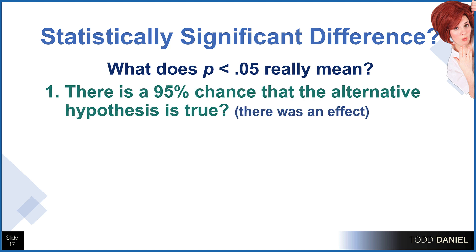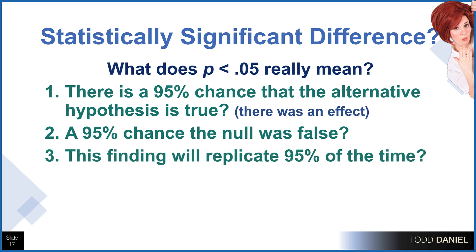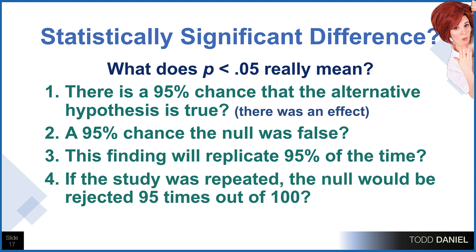If I tell you that there is a statistically significant difference at p less than 0.05, does that mean that there is a 95% chance that the alternative hypothesis is true, or that there was an effect? Or does that mean that there's a 95% chance that the null hypothesis was false? Or does it mean that this finding will replicate 95% of the time? Or if the study was repeated, the null hypothesis would be rejected 95 times out of 100. Is that what statistical significance means?